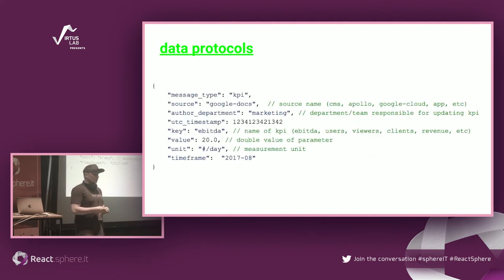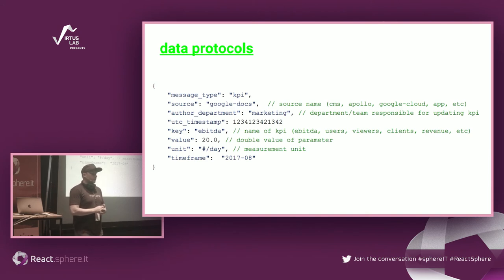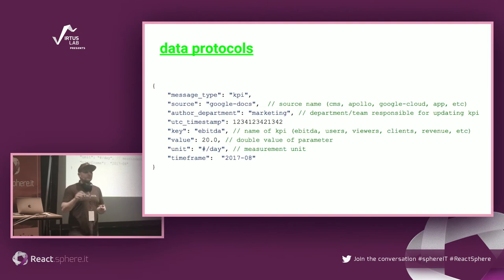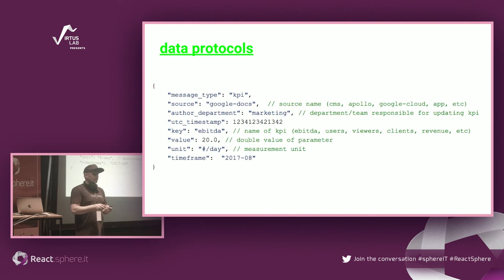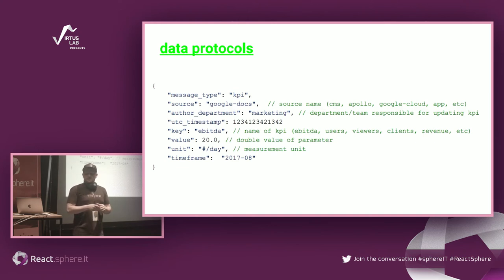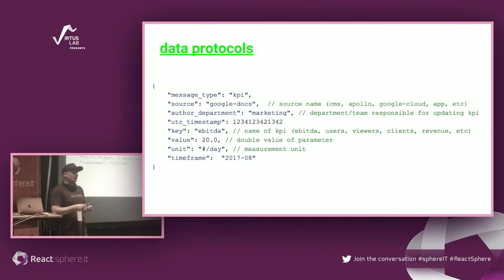Another important aspect was introducing data protocols — the formats for transferring data over streaming systems. This is important because when you have different microservices producing data from different sources like FTP or the internet, you don't want to get lost in the formats. We defined how our logs look, how our metrics look, and how valuable data should look, creating company-wide standards understandable by everyone. This makes it easier for a data analyst to build dashboards for any team based on standardized data.